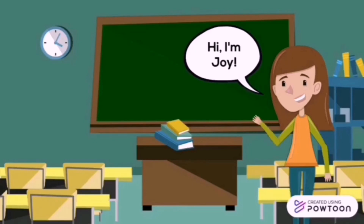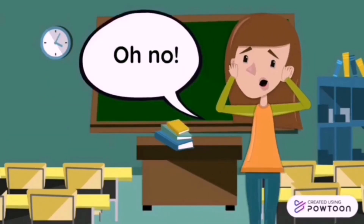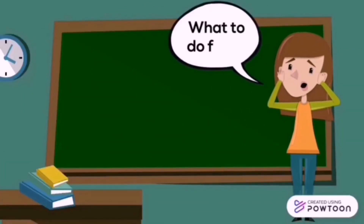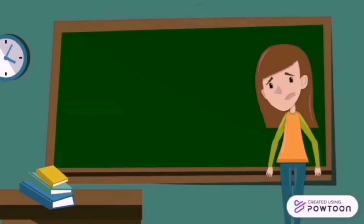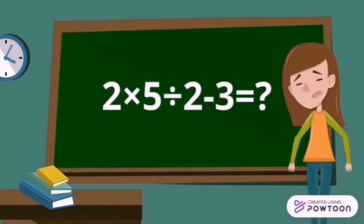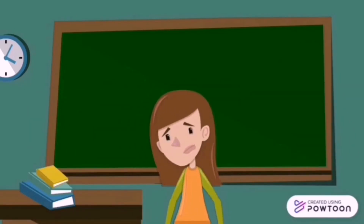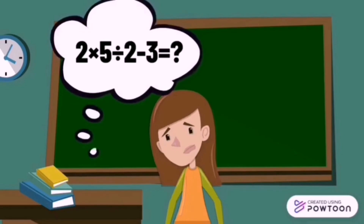We are going to learn it in an easier way. Joy wanted to solve the math problem, but it seems to be hard. She is confused about what order of operations to solve first: 2 times 5 divided by 2 minus 3. Hmm, it seems to be difficult. Will you help my friend Joy in solving and discovering the answer to that math problem?